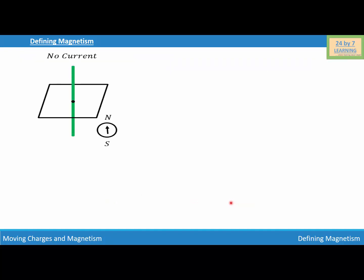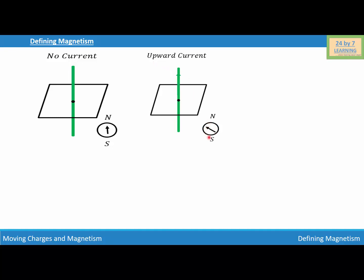Now let's consider a current-carrying conductor. I am placing a compass needle close to the current-carrying conductor when there is no current in the conductor. Since there is no current, there is no deflection in the compass needle. Now, when the current is moving upward, there is a deflection in the compass needle because the flow of electric current develops a magnetic field around the current-carrying conductor.